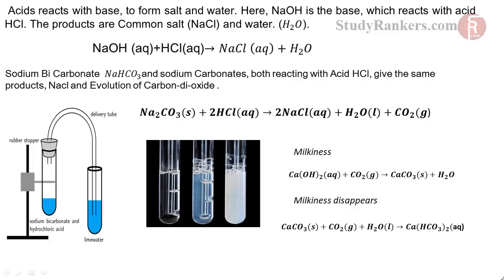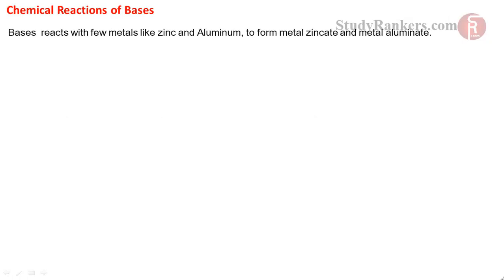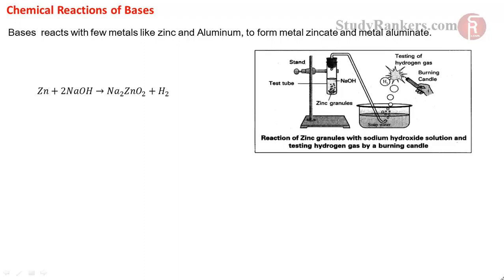Bases react with a few metals like zinc and aluminum to form metal zincate and metal aluminate. For example, zinc reacts with sodium hydroxide base to form sodium zincate and releases hydrogen gas. Bases also react with non-basic oxides such as CO₂ gas to form metal carbonate and water.